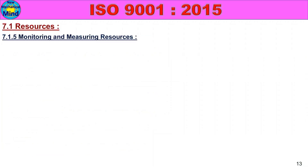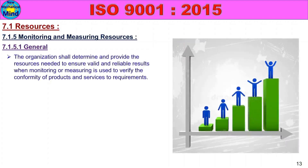7.1.5 Monitoring and Measuring Resources — 7.1.5.1 General: The organization shall determine and provide the resources needed to ensure valid and reliable results when monitoring or measuring is used to verify the conformity of products and services to requirements.